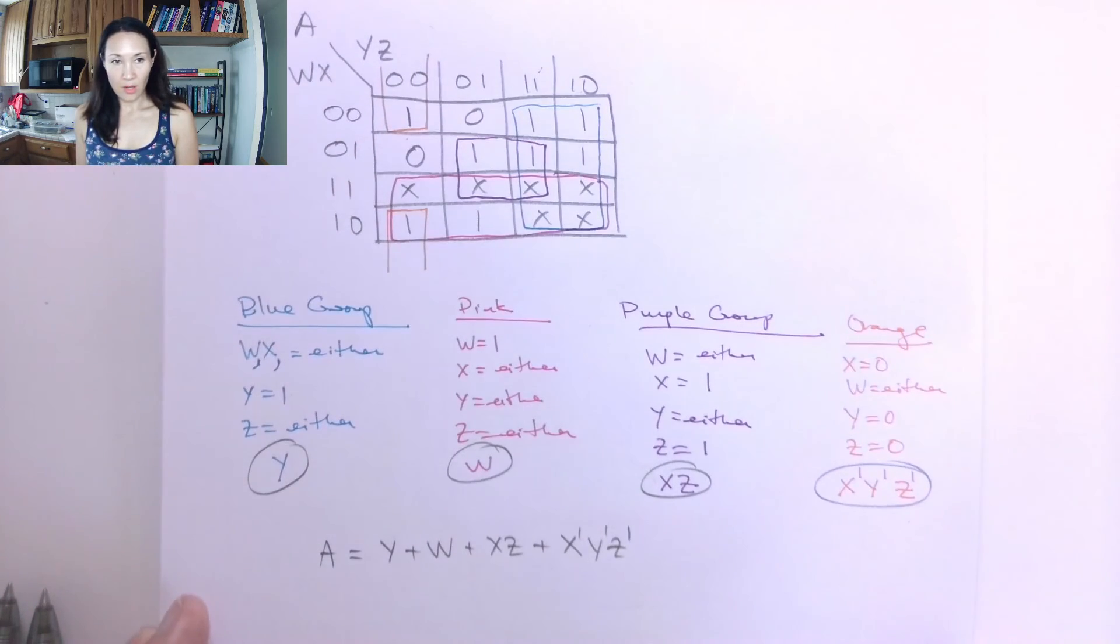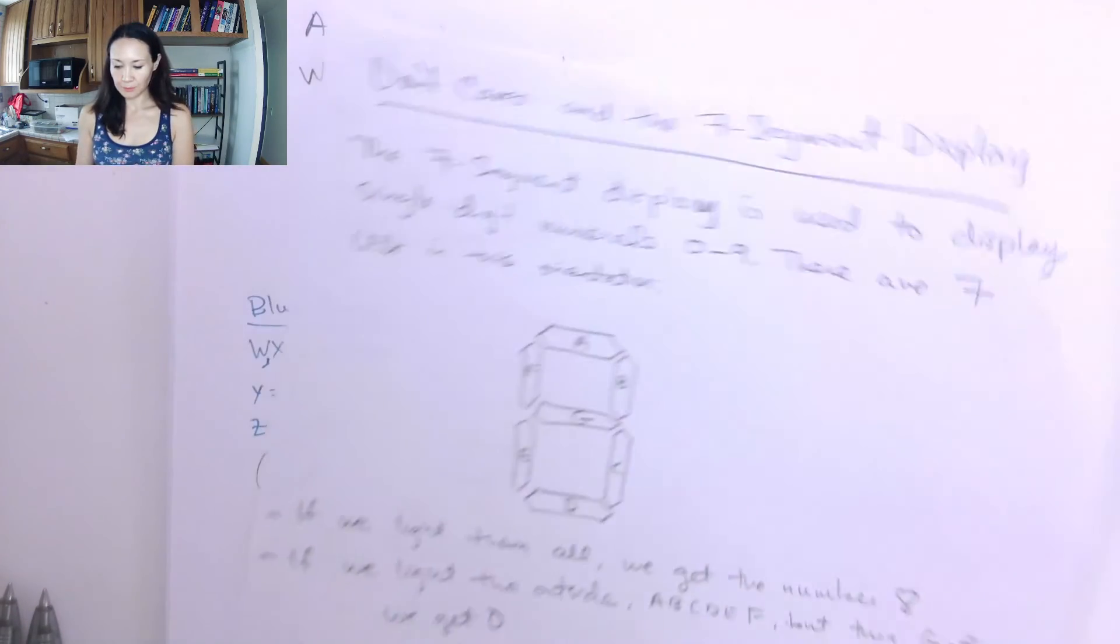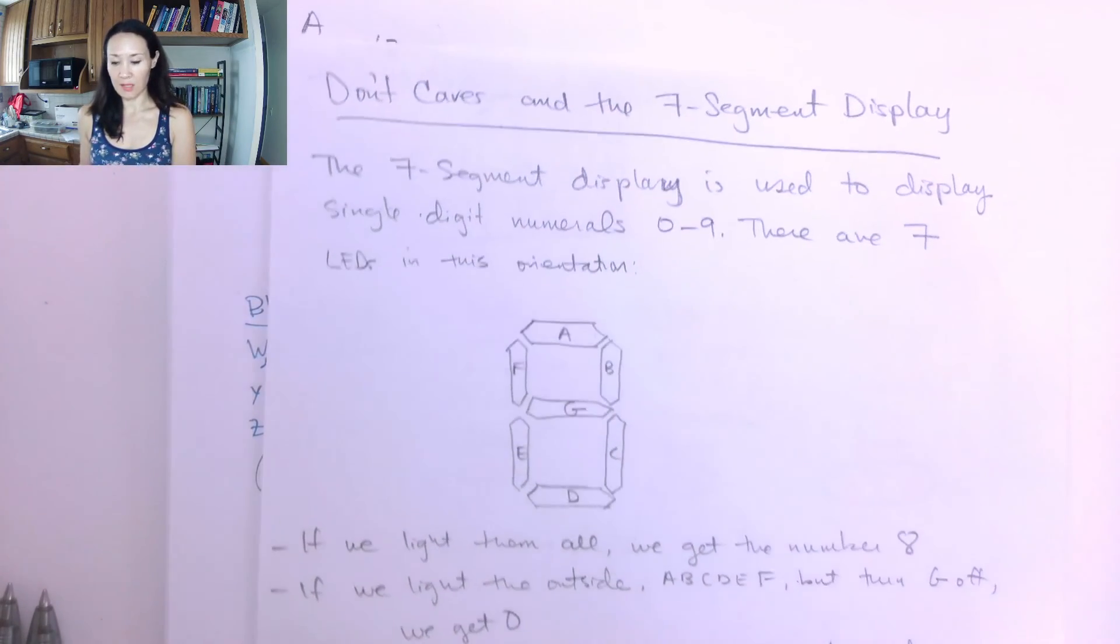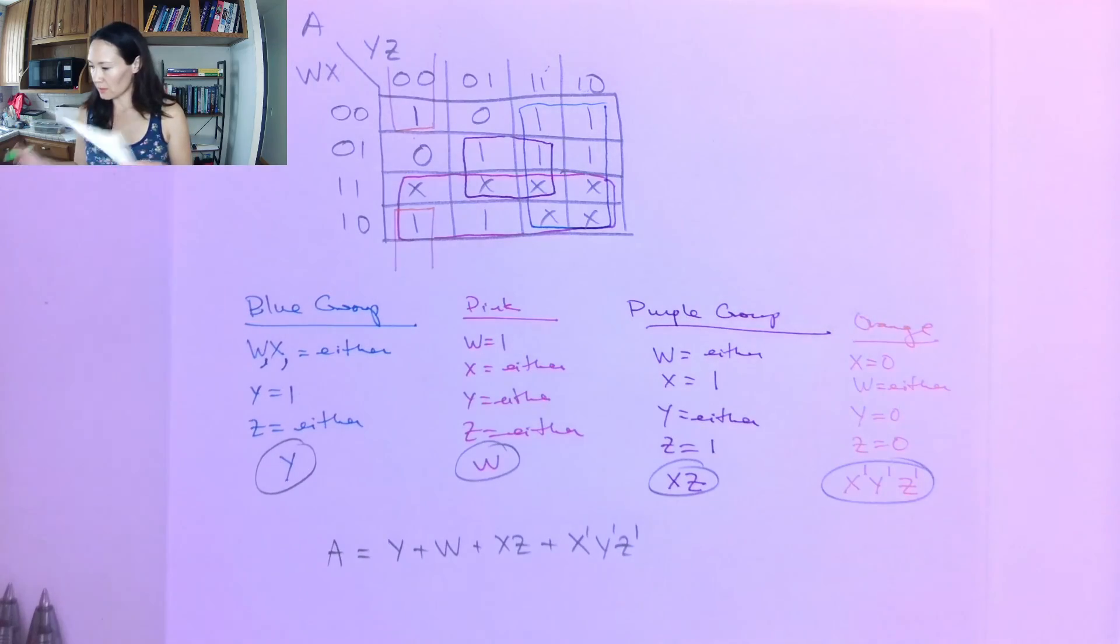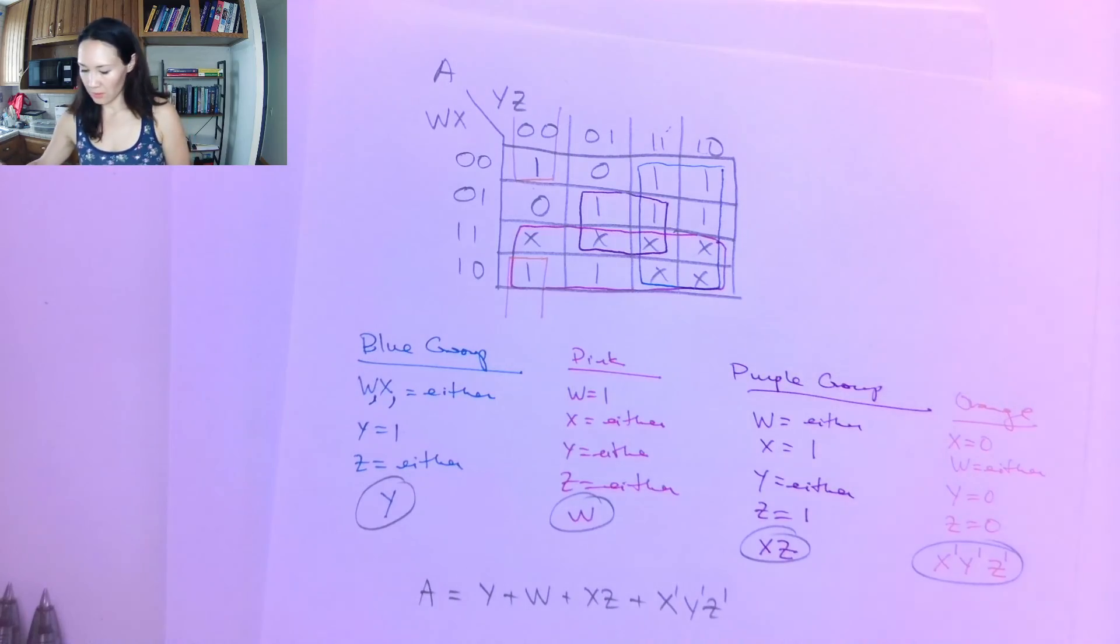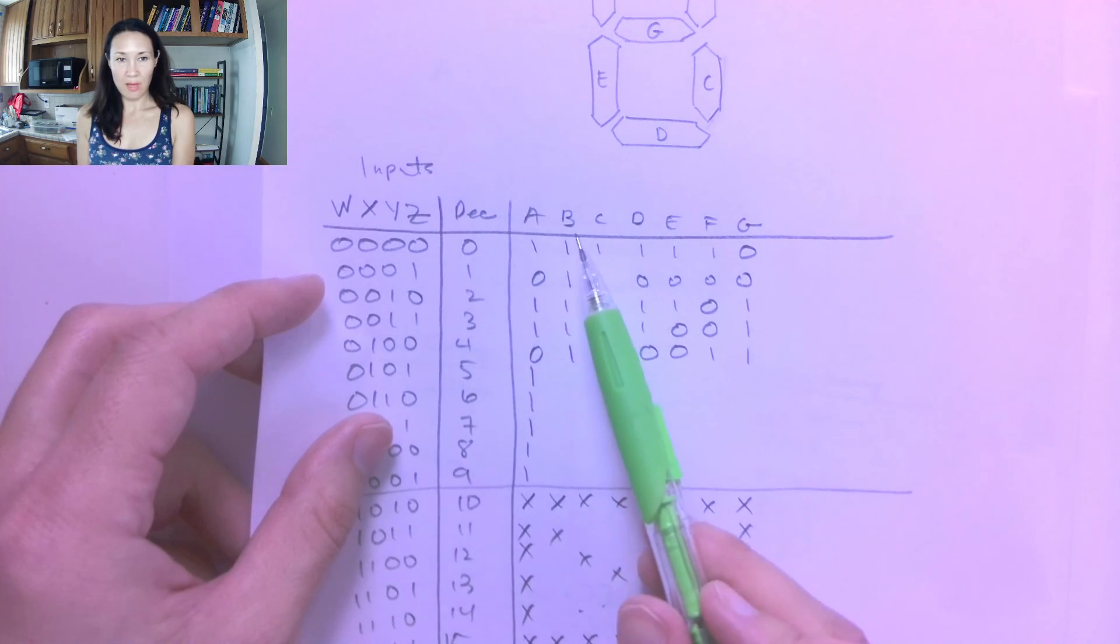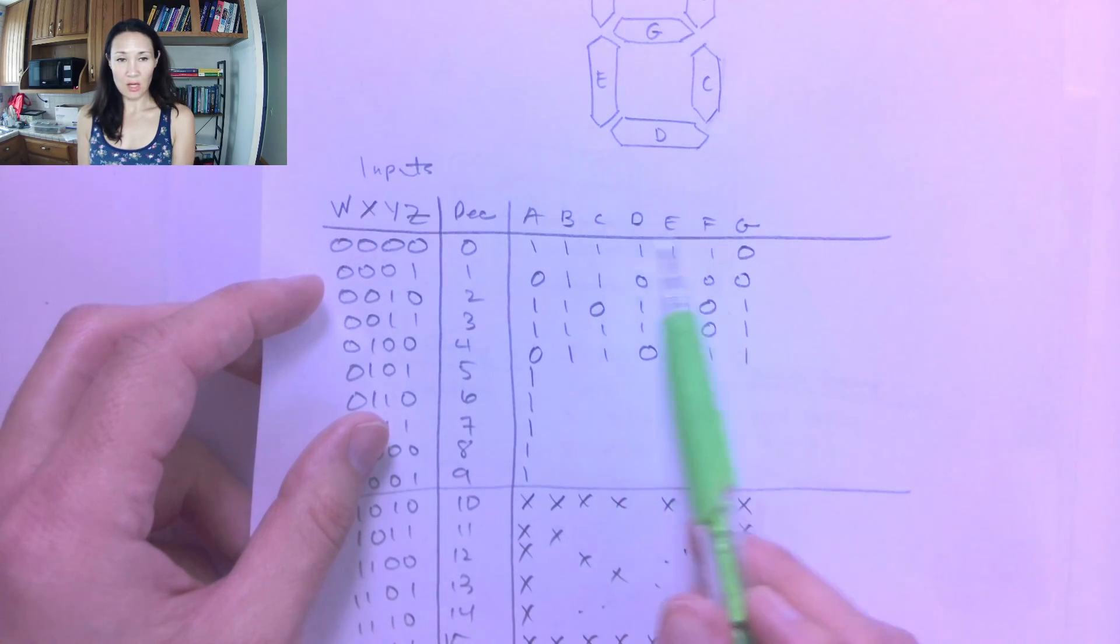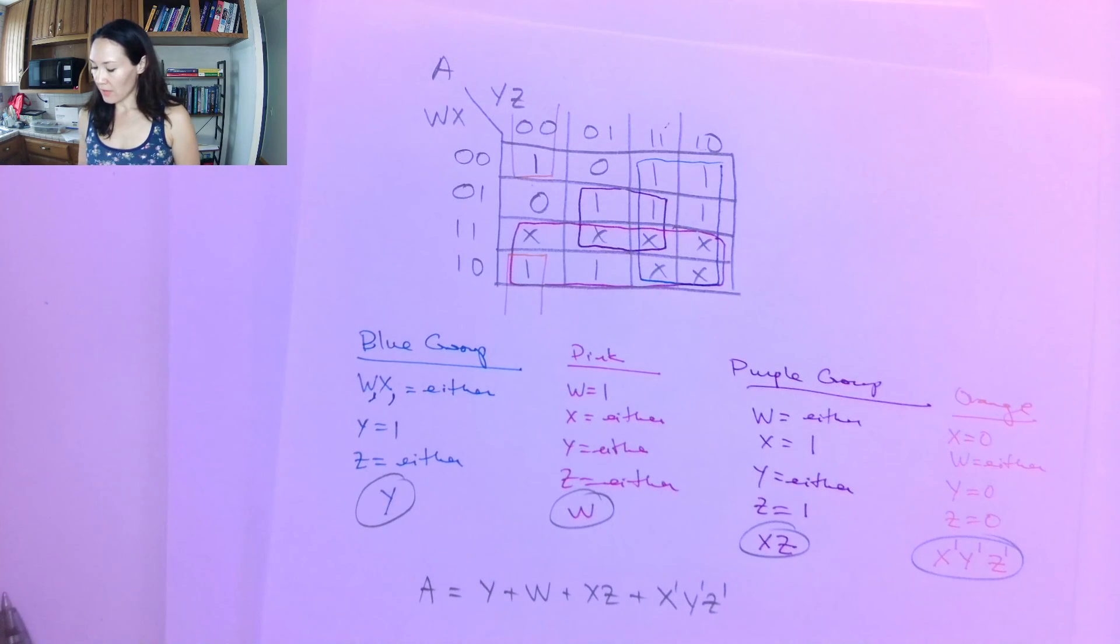So this is just the Karnaugh map for one output, the output A that corresponds to this LED on the seven segment display. So a good exercise for you guys to do would be to complete this table that I started, here it is, that we started together here, complete the table, and then make Karnaugh maps for B, C, D, E, F, and G all separately and come up with the most simplified Boolean expression for those. And then you will have an output mapping for the seven segment display. So let me know if you have questions about that.